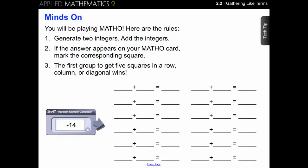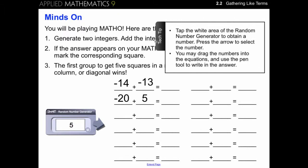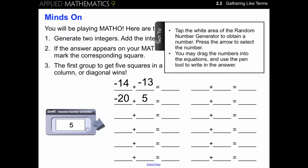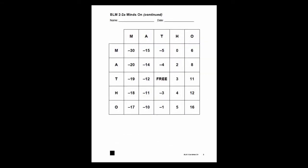The Minds On portion of the lesson is used to activate prior knowledge. A game or activity is provided to enable students to recall and apply concepts needed for success in the lesson. These games and activities harness the power of the interactive whiteboard to engage students. In this particular activity, students will be playing a game called Matho, which is similar to Bingo. You use the Smart Random Number Generator to generate integers, and students add the integers and mark off the answers on their cards until someone wins. Tech Tips are provided to ensure teachers and students know how to use the technology used in the lessons. The Matho card is available as a blackline master in Word format, and is modifiable so every student can have different numbers on their card.